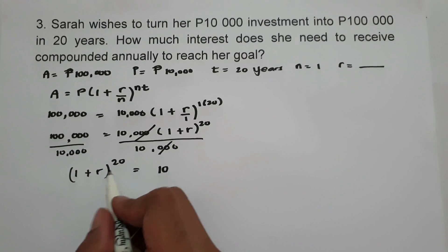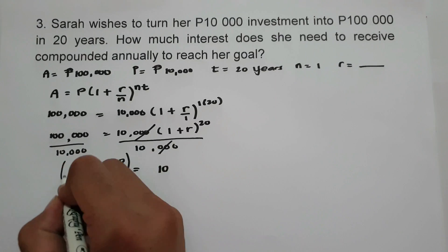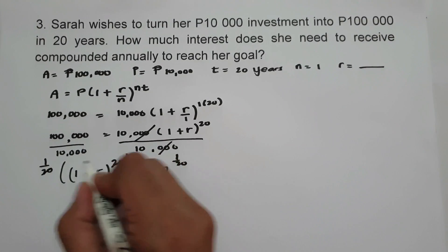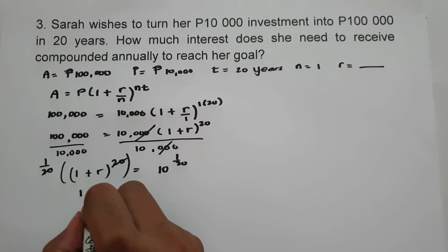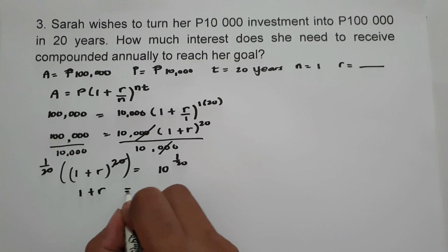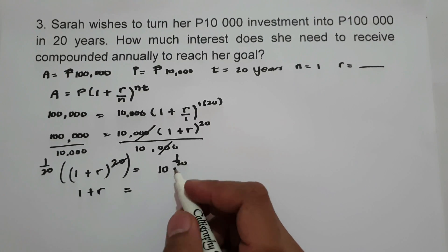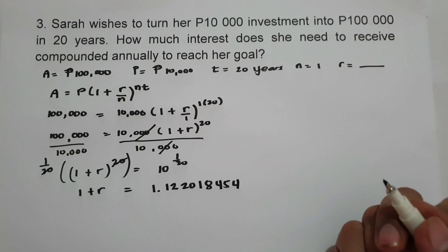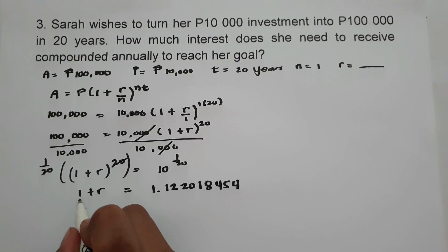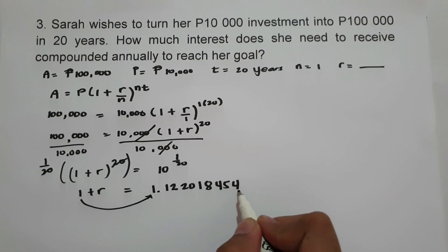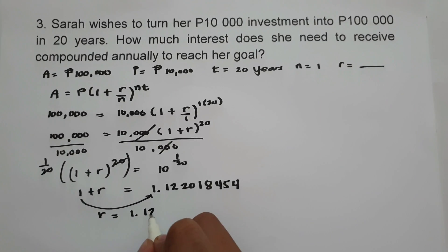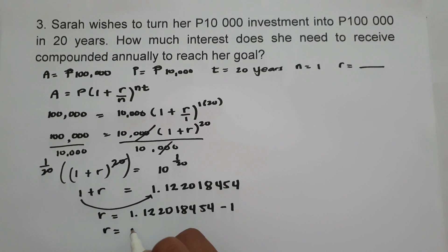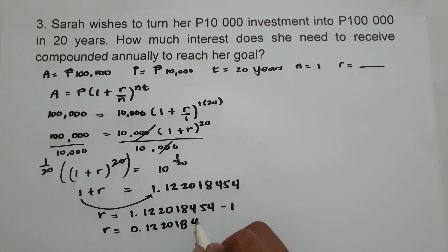To eliminate the exponent, we raise both sides of the equation to the power of 1 over 20. So 10 raised to 1 over 20. This cancels the exponent on the left side, giving us 1 plus R equals 1.122018454. Moving 1 to the other side, R equals 1.122018454 minus 1, which is 0.122018454.